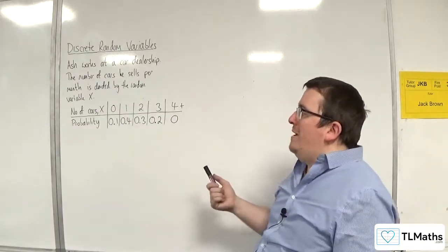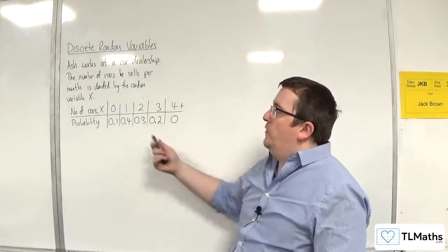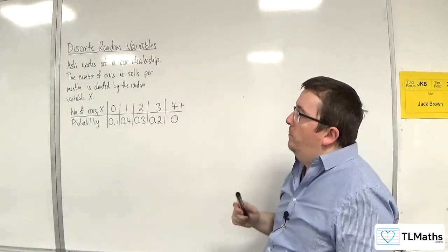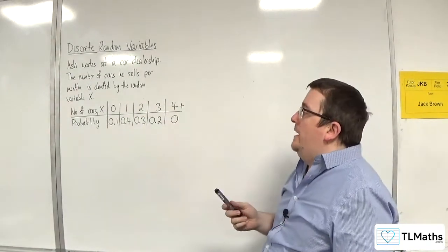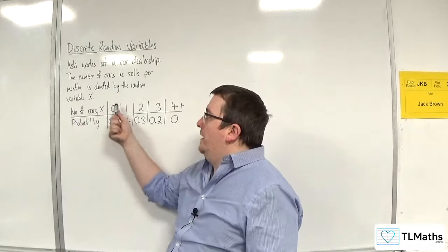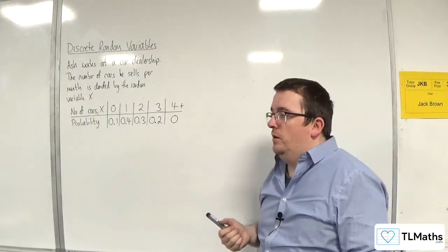So, here is a discrete probability distribution where we've got the number of cars, 0, 1, 2, 3, or 4 plus, and the probability of selling that number of cars in each given month.